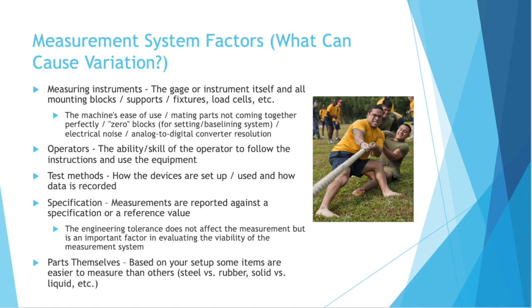So measurements are reported against a specification or a reference value. The engineering tolerance does not affect the measurement, but it is an important factor in evaluating the viability of the measurement system. If you're manufacturing just fine with tolerance, but you get a new specification that is much tighter, now the variation in your measurement system could be a bigger factor.